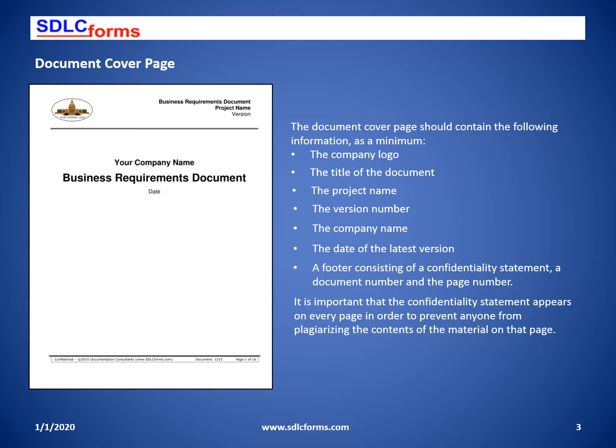Let's step through the elements in a typical document starting with the cover page. What are the text elements that should appear on this page for ease of personnel to recognize what's in this document? What is the document title, the project name and version? Will it contain a confidentiality agreement to protect the company? And does it include the document number and sequential page numbering?